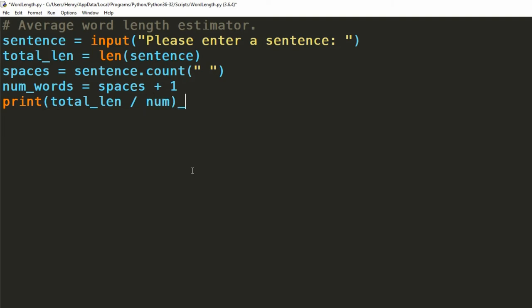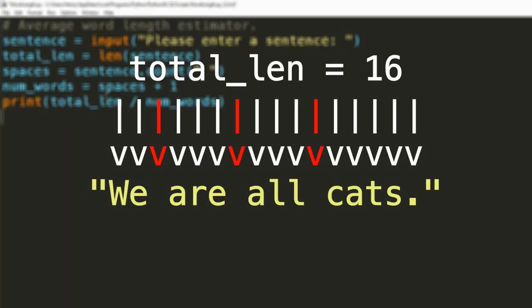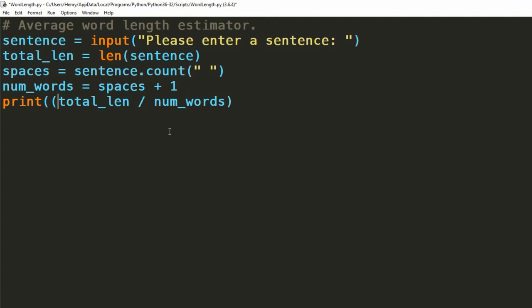From here we can then print out an estimate of the average words by dividing the total number of characters by the number of words. Although some of you might know there is an issue here. We've counted the spaces when we were counting the total characters. When this isn't what we should be doing. We should only be counting the letter characters. What we can do here then is subtract the number of spaces from the sentence length. So we're only left with the letter characters. We then divide this answer by the total number of words.